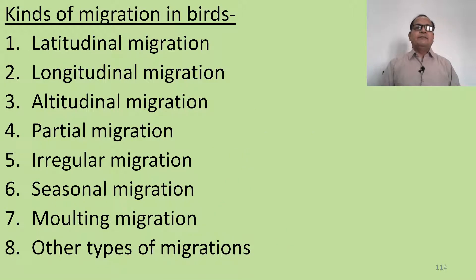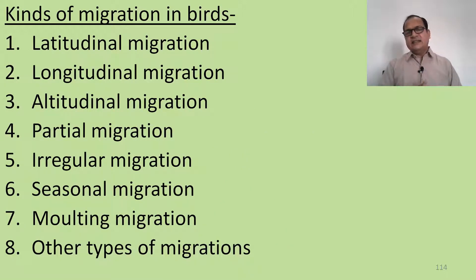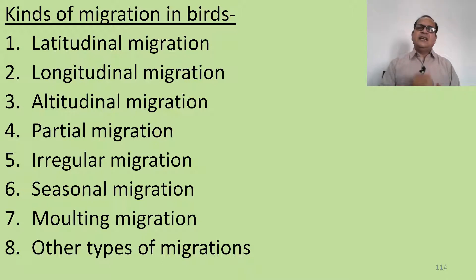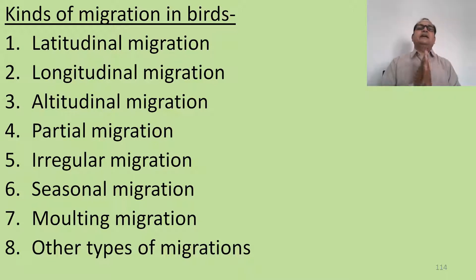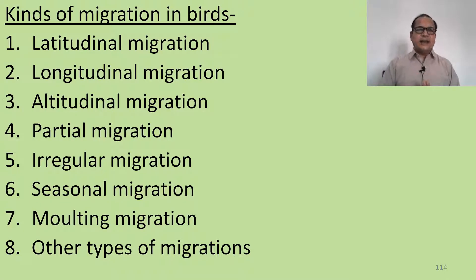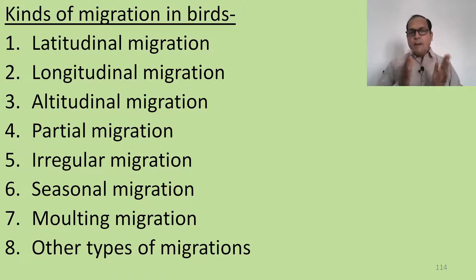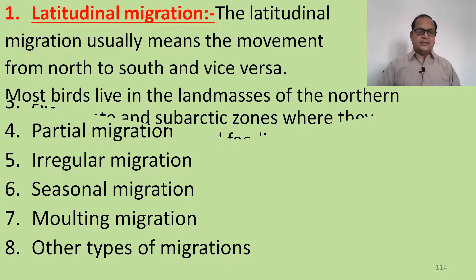There are eight kinds of migration: latitudinal migration, longitudinal migration, altitudinal migration, partial migration, irregular migration, seasonal migration, molting migration, and other types of migration.